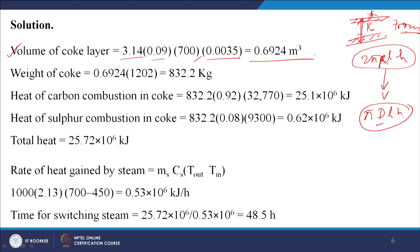This amount of coke is deposited inside the coil. Heat of combustion of coke: since coke has 92% carbon and 8% sulfur — mass of carbon = 0.92 × 832.2 kg, combusted to CO₂ with ΔH = 32,770 kJ per kg, giving approximately 2.5 × 10⁶ kJ.